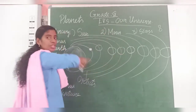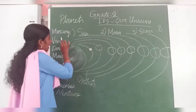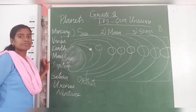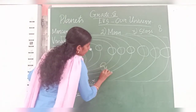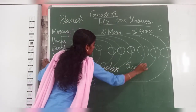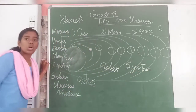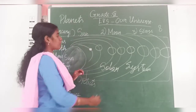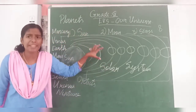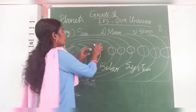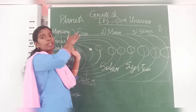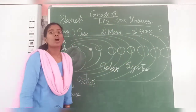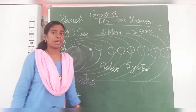These eight planets are around the sun. The sun and these eight planets together are called the solar system. What is this called? It is called the solar system. The sun will be in the center and it will have eight orbits around it. These planets revolve only in the orbits — they won't move out of the orbits.